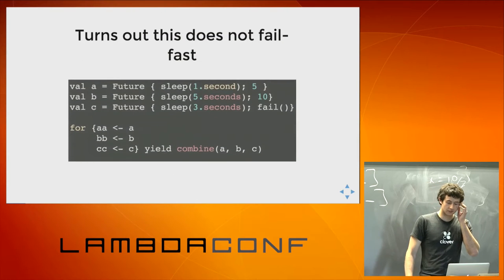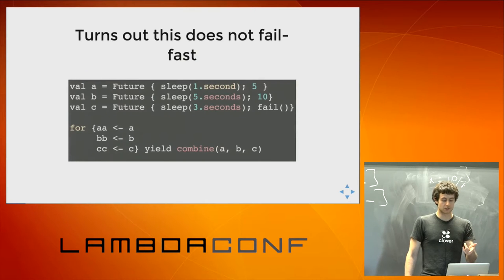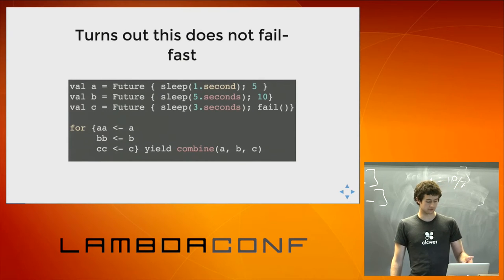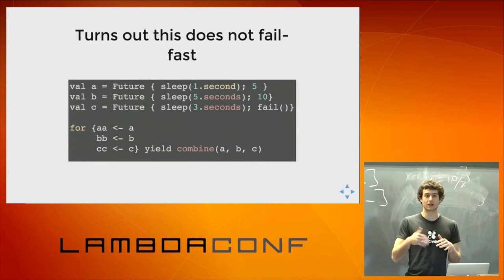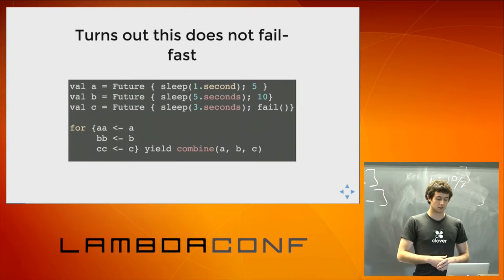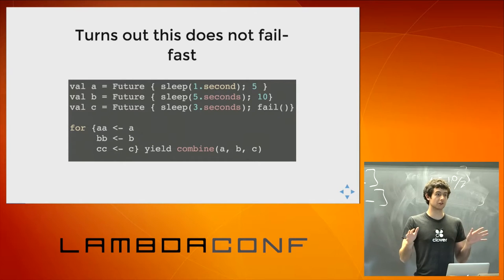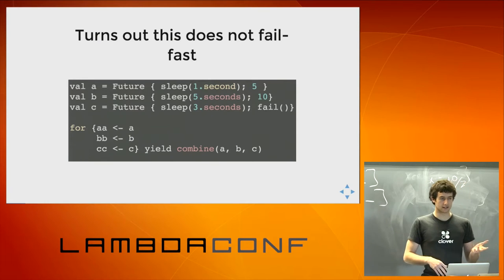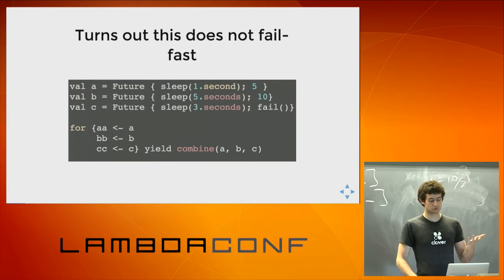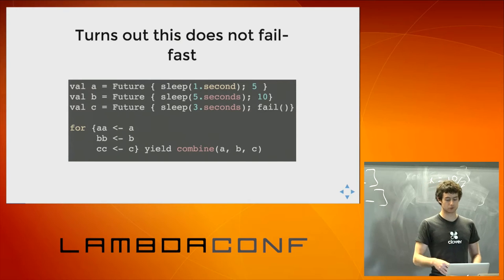I'm going to explain why fundamentally it's not possible to fail fast with for-comprehensions. But using vanilla futures, even without for-comprehensions, directly writing maps or flat maps, it actually doesn't fail fast either — though there's no fundamental reason why it can't. It's just the current implementation doesn't do it. As an interesting note, Twitter futures do fail fast when you're using map and join.